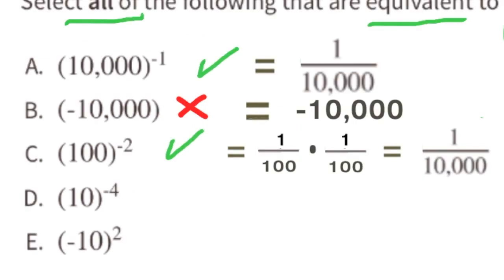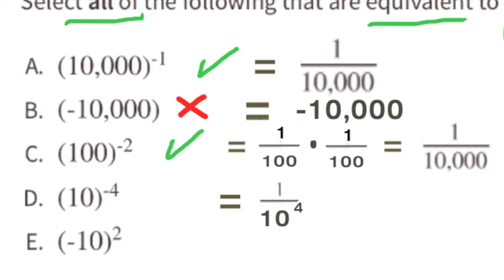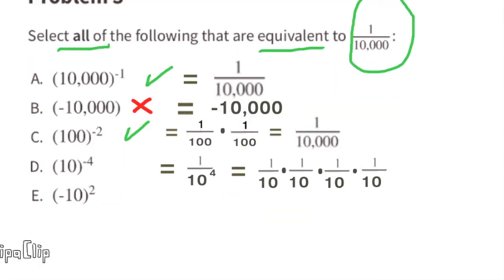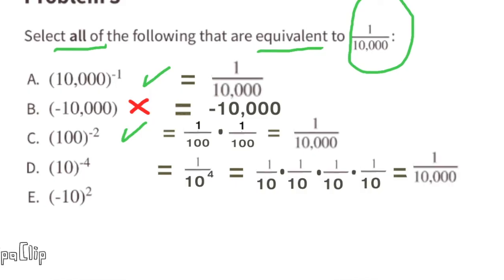Option D: 10 to the power of negative 4. Making the exponent positive puts it on the bottom: 1 over 10 to the power of positive 4. Since 10 to the fourth is 10,000, I would select D, because 10 to the power of negative 4 is equivalent to 1 over 10,000.